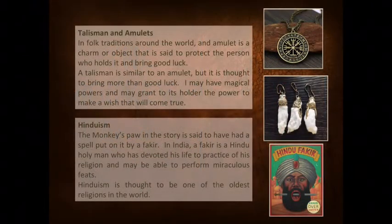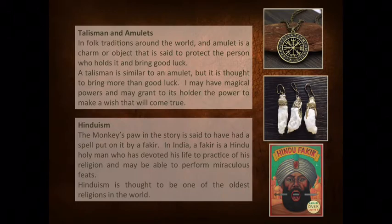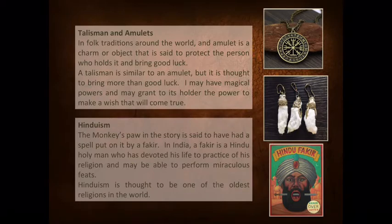Before you read, I would like you to know about the following information. Talismans and amulets: In folk traditions around the world, an amulet is a charm or object that is said to protect the person who holds it and bring good luck. A talisman is similar to an amulet, but it is thought to bring more than good luck. It may have magical powers and may grant to its holder the power to make a wish that will come true.